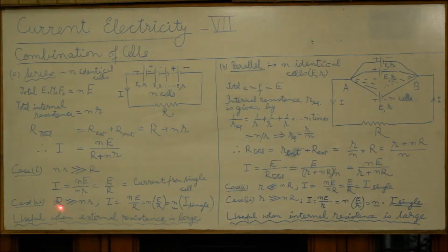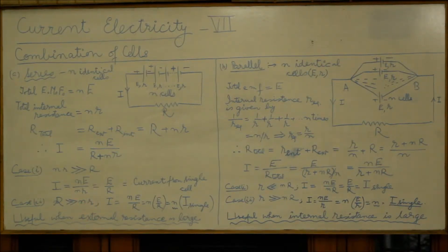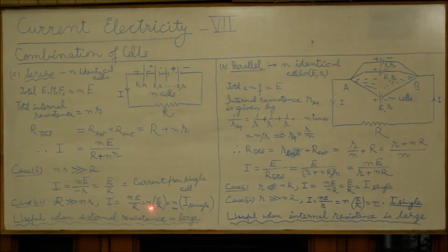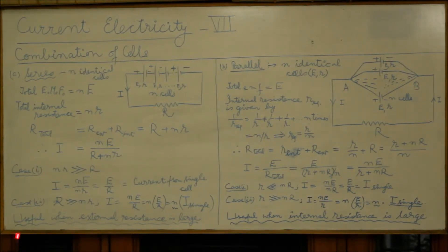Coming to case 2: if R is very large as compared to the internal resistance, we neglect the factor nr, and the current comes out to be ne/R. Here e/R is the current provided by a single cell to the load resistance R, so the total current is n multiplied by the current from a single cell. Hence, a series combination is useful when the external resistance is large.